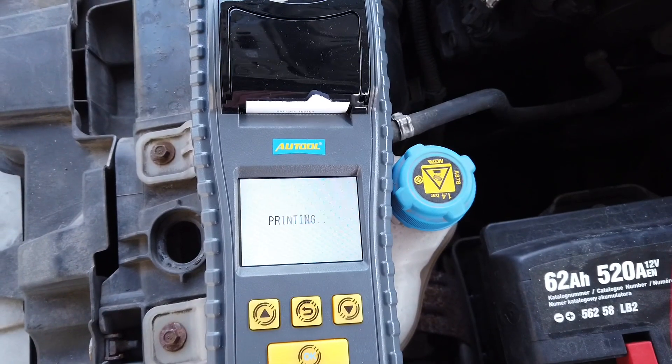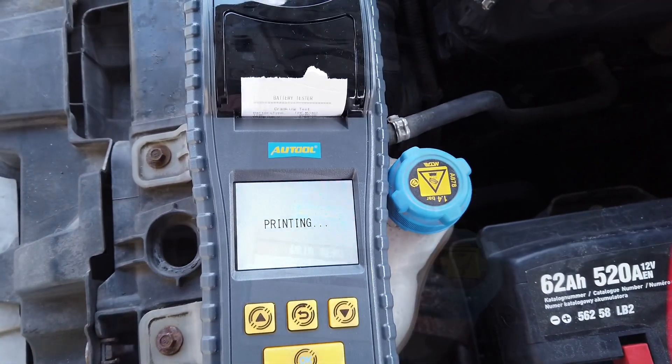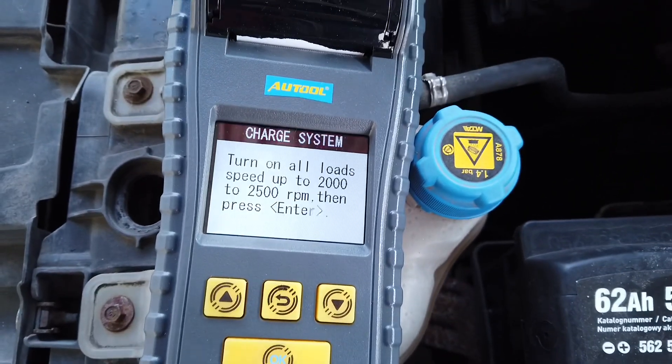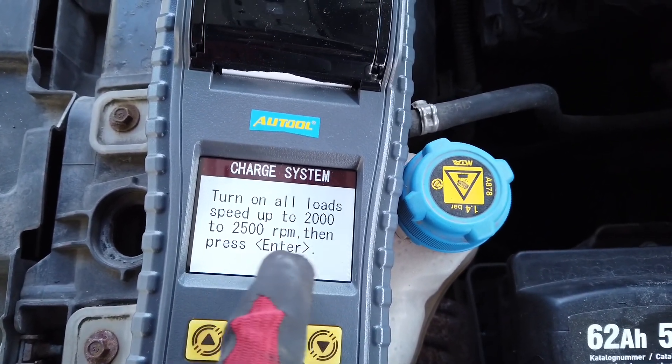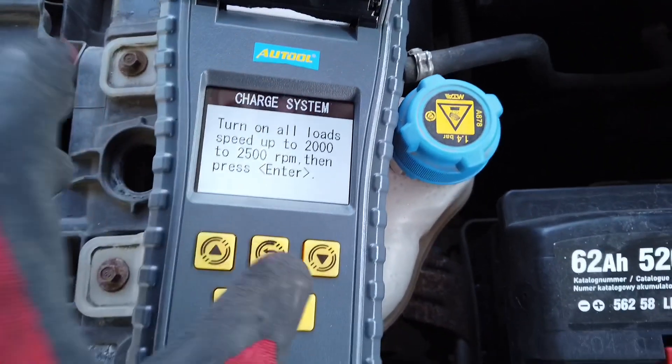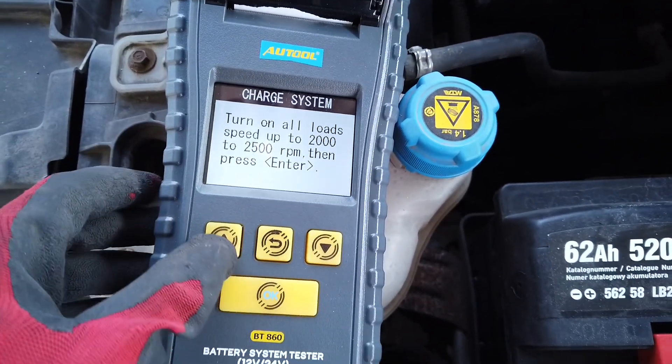Let's check the charge system. Turn on all loads, speed up to 2000 RPM, then press enter. OK, so I would have to take this to the car. I'm not sure if I can do this, but let's start the engine first.